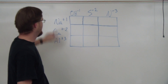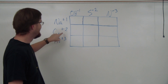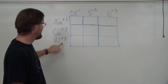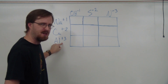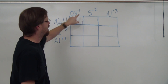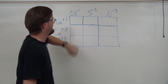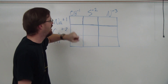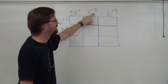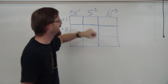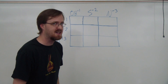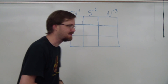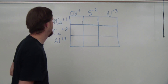Our cations: we have sodium plus one, calcium plus two, and aluminum plus three. Our anions across the top: we have hydroxide negative one, sulfur negative two, and nitrogen negative three. So let's put them together to make some ionic compounds.